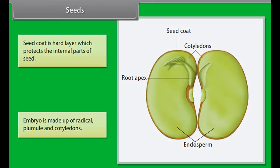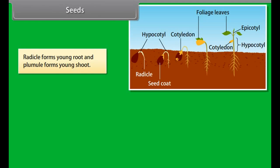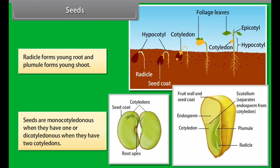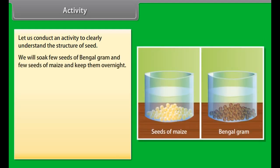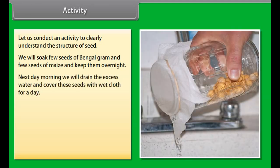Seeds are matured ovules. They contain an embryo and reserve food used by the developing embryo at the time of seedling formation. A mature seed is made up of two important parts: the seed coat and the embryo. The seed coat is a hard layer that protects the internal parts. The embryo is made up of the radicle, plumule, and cotyledons. The radicle forms the young root and the plumule forms the young shoot. Seeds are monocotyledonous when they have one cotyledon, or dicotyledonous when they have two.